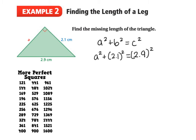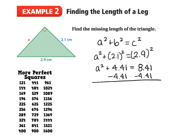Now I'll figure out those squares. Using my chart, 21 squared is 441, so 2.1 squared is 4.41. And 29 squared is 841, so 2.9 squared is 8.41. So we have a squared plus 4.41 is equal to 8.41. Subtracting 4.41 from both sides gives a squared is equal to 4. Taking the square root of both sides, a is equal to 2 centimeters.